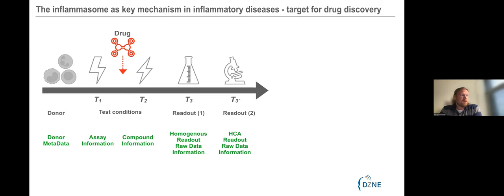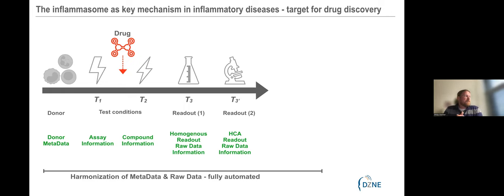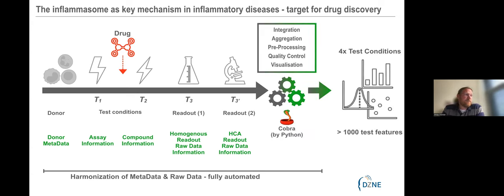We collect all raw data — homogeneous raw data and image raw data. When you really run a process like this over months and years, it is absolutely key that you harmonize all this data — the metadata and the raw data. For this, we developed a software package based on Python, which we call COBRA. It's fully automated, integrates, aggregates, and pre-processes all the raw data and all information that comes along with assay processing. It checks, performs quality control, and visualization.